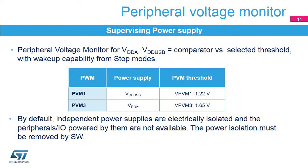The STM32WB embeds four peripheral voltage monitors to detect if the independent supply is present or not. These comparators have wake-up-from-stop mode capability. PVM-1 compares the VDD-USB voltage with the 1.22-volt threshold. PVM-3 compares the VDD-USB voltage with the 1.65-volt threshold, intended for the comparators and analog-to-digital converters. PVM-2 and PVM-4 are reserved. To guarantee any of the supply sequences, power isolation has been implemented and is active by default; it is the role of software to enable the needed supplies by removing the power isolation.